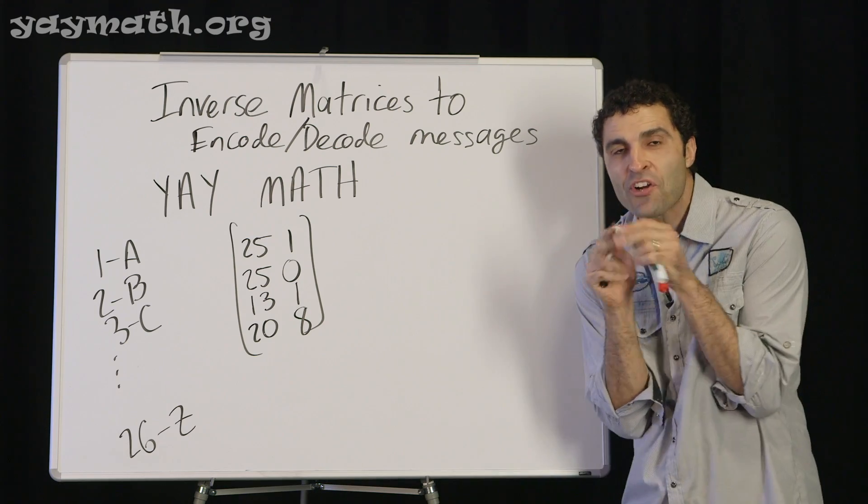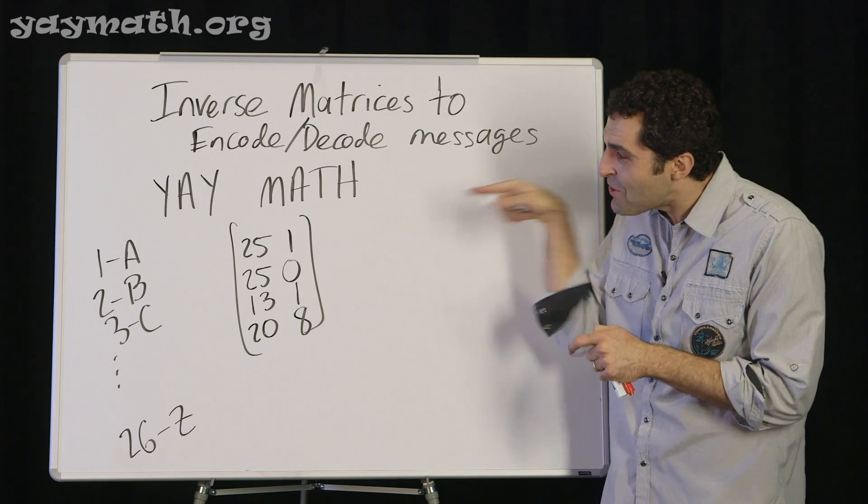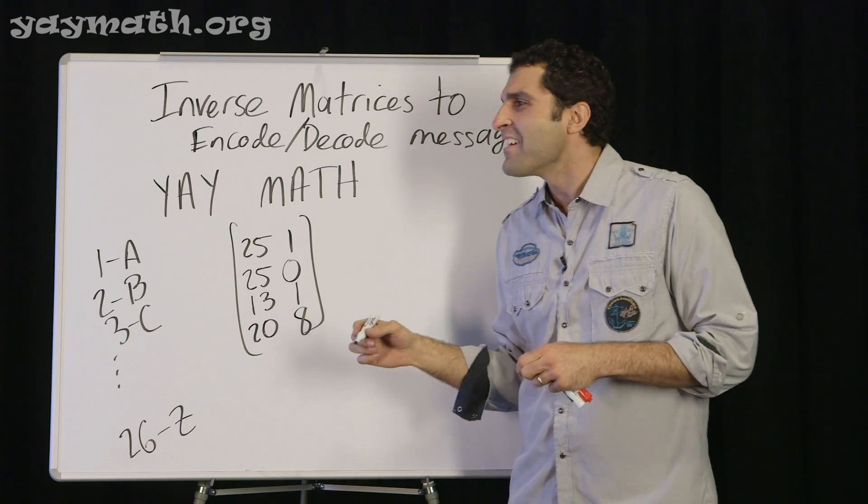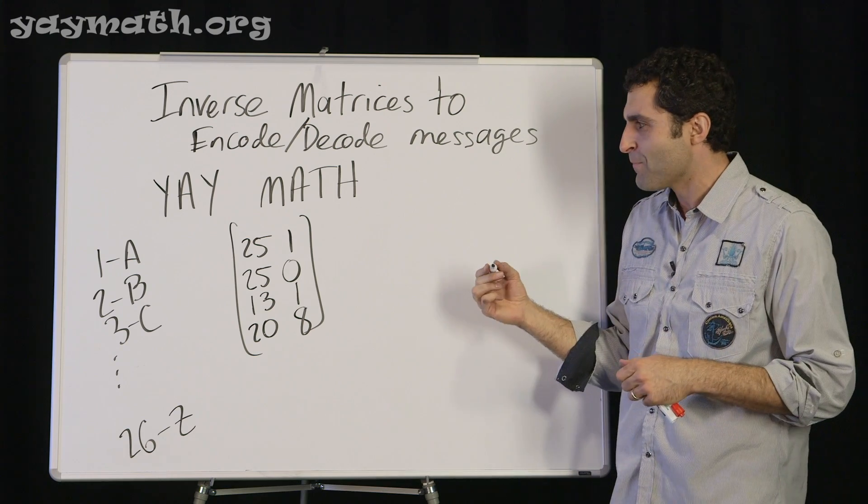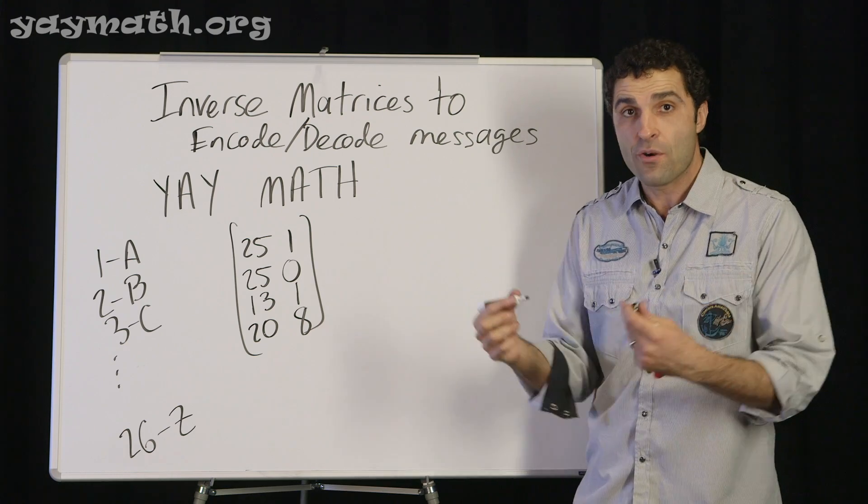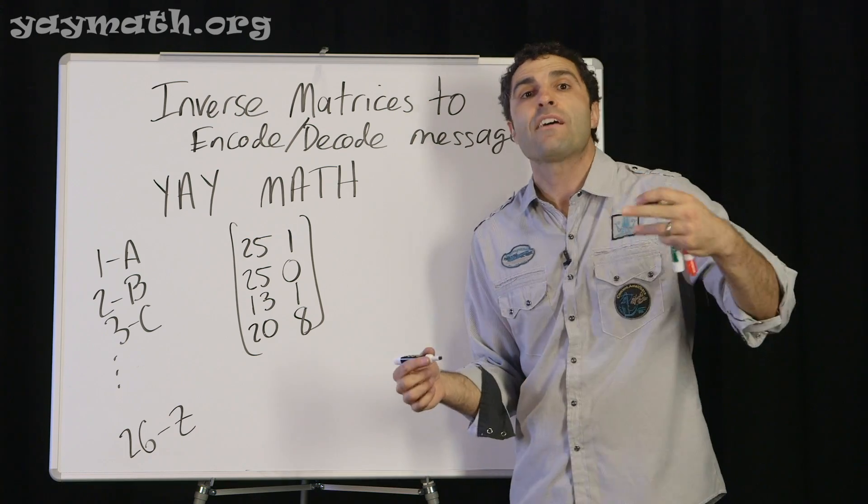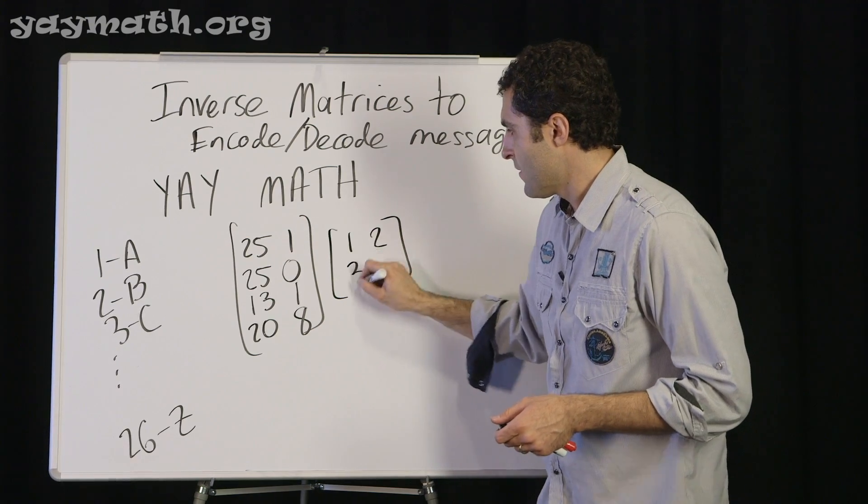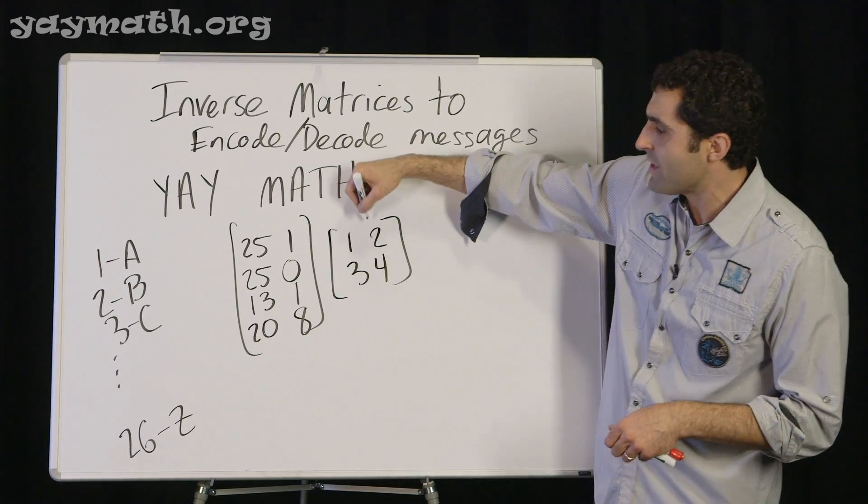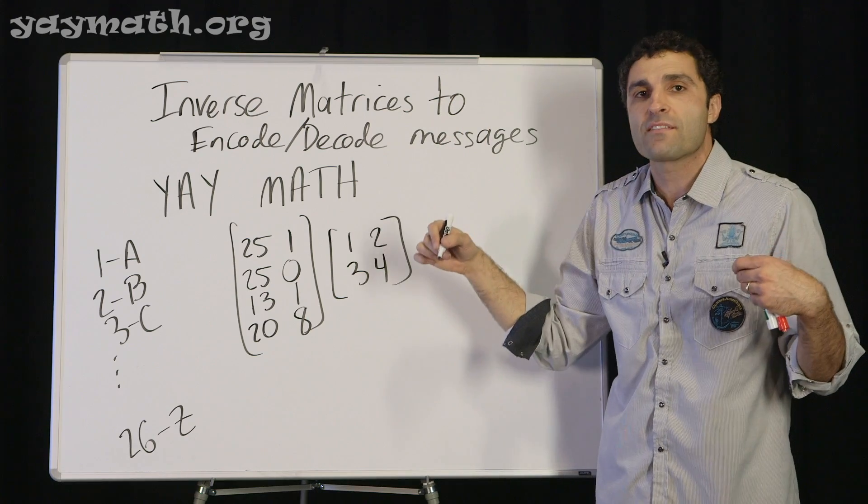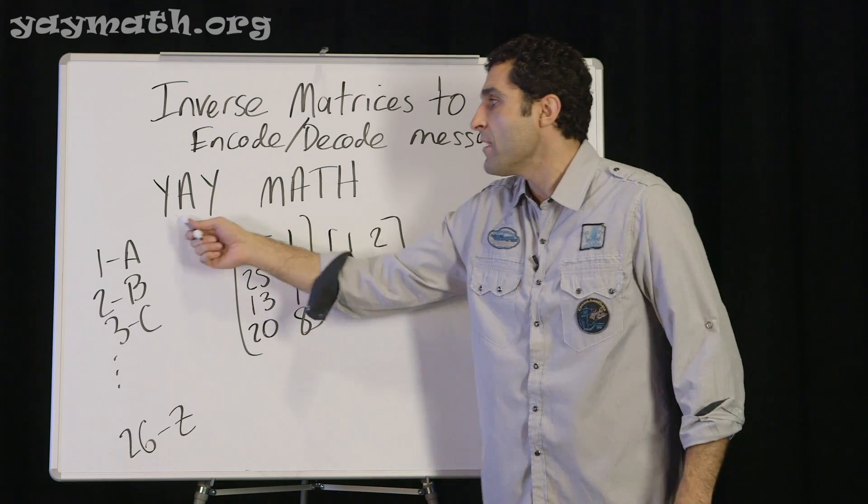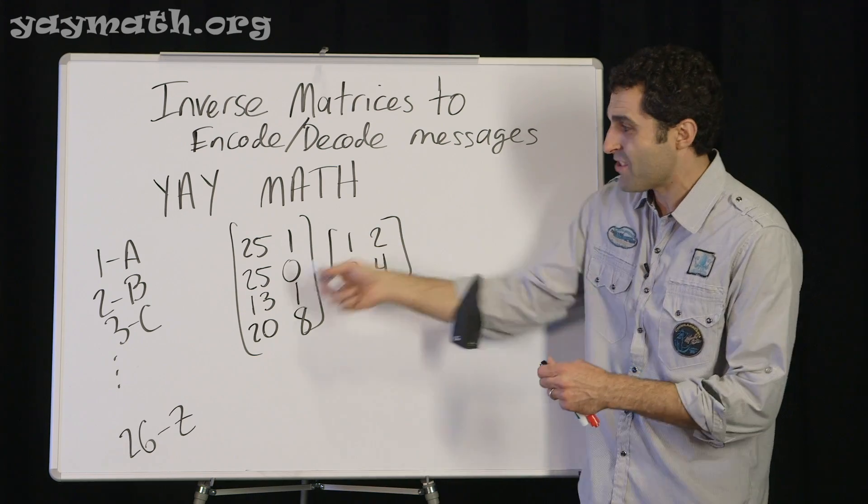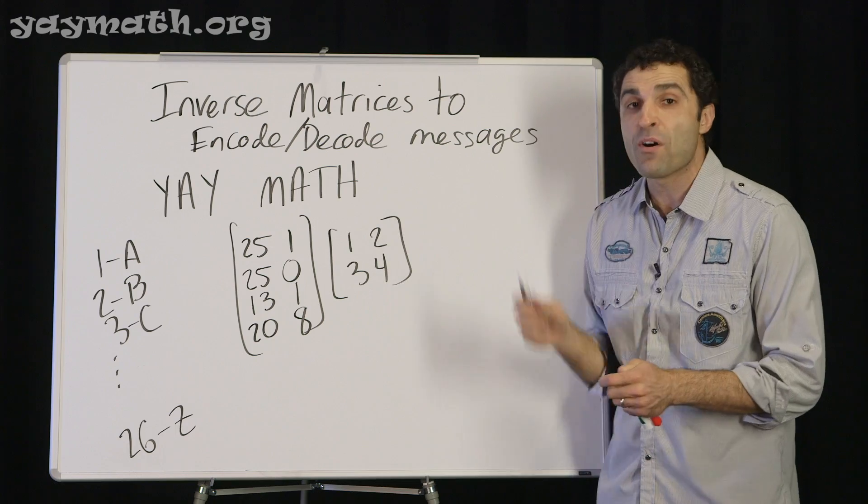Now we're going to turn it into our little secret. We have to pick a matrix to encode it. Whatever matrix that is, that's the stuff that we share. I like the numbers 1, 2, 3, 4. I think that's simple. So now, this is called the encoding matrix. It could be whatever we want. The problem would say encode the message yaymath with the matrix 1, 2, 3, 4, or it could be any other matrix. But now we're going to turn this into our code.